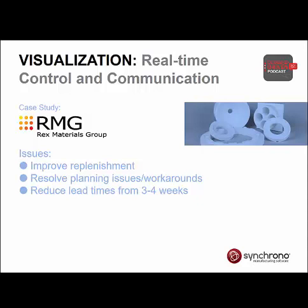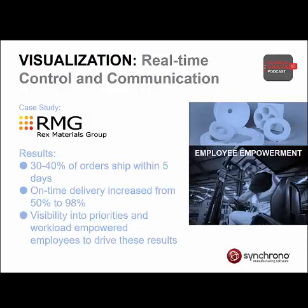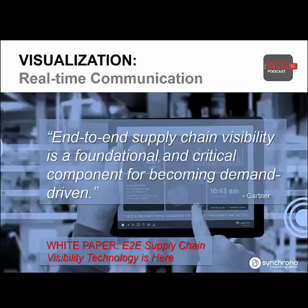Rex Materials Group is a progressive organization in terms of applying lean and constraints management principles, yet they were still struggling with these issues. They discovered that by providing greater visibility into order information and priorities, they were able to empower their workers to help resolve them. Through cross-training and giving operators and everyone in their organization visibility into order status and priorities, operators who were caught up on their priorities could see other areas where they were cross-trained and their help was needed. In this case, visualization along with cross-training really drove strong results.